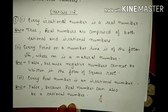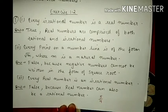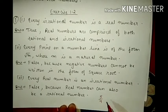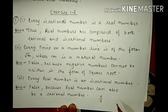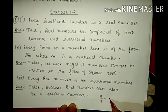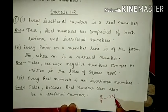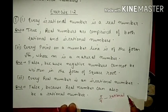The third statement is: every real number is an irrational number. This statement is false, because a real number can also be a rational number. Take one example: 5 by 4. This is a real number, but it is not an irrational number — it is a rational number.